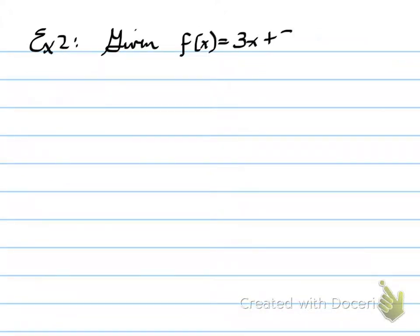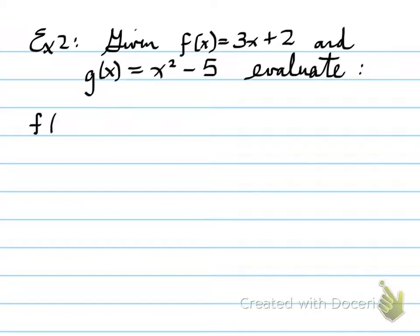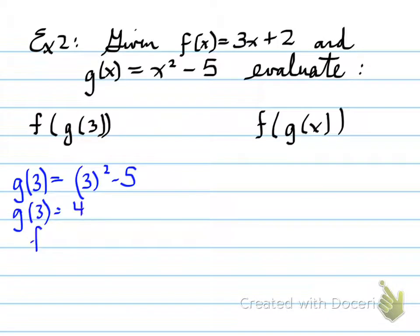Example number 2, given f at x is equal to 3x plus 2 and g at x is equal to x squared minus 5, evaluate the following. So this one is not asking for derivatives. It's asking you to determine what the composition function means. This is saying find g at 3 first. Plug it in. Once you do that, you can then plug in the answer to that into f.